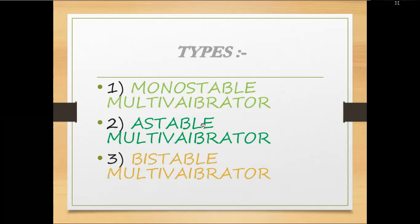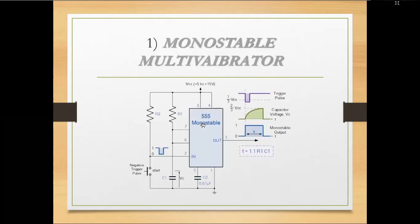There are three types of 555 timer configurations: number 1 is monostable, number 2 is astable, and number 3 is bistable.